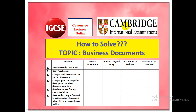IGCSE CIE International Examinations — how to solve problems related to the business documents topic. Transactions are given, source documents, books of original entry, and the debit and credit accounts of each transaction are to be identified.